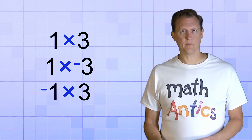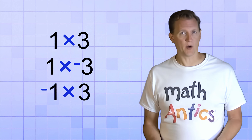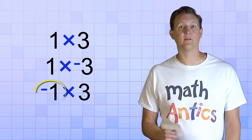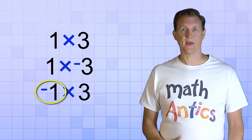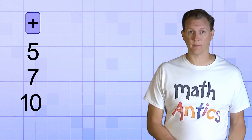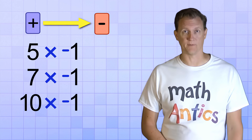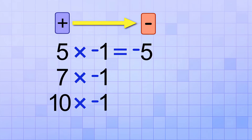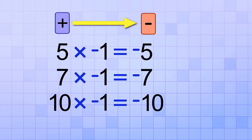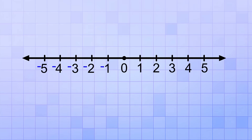One way to think about negative numbers is to imagine they're just like positive numbers, but they always have a factor of negative 1 built into them. That means if you want to change a positive number into a negative number, all you have to do is multiply it by a factor of negative 1. For example: 5 times negative 1 is negative 5, 7 times negative 1 is negative 7, 10 times negative 1 is negative 10. Multiplying by a factor of negative 1 just switches a number from the positive side of the number line to the negative side.